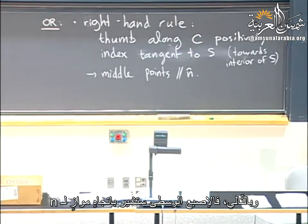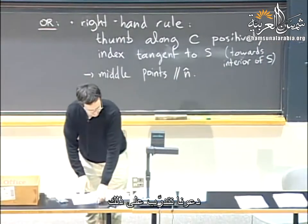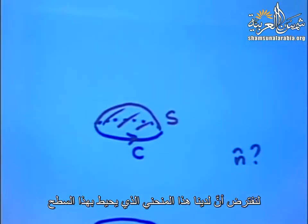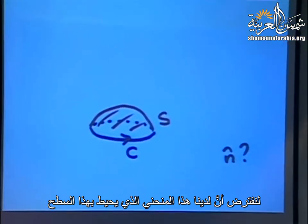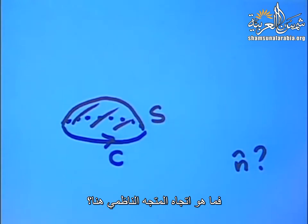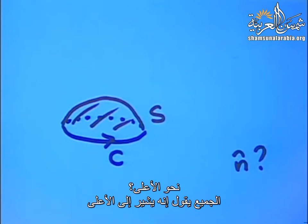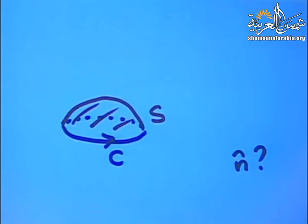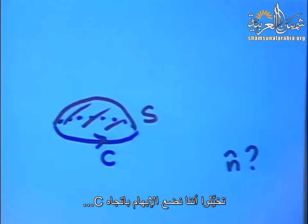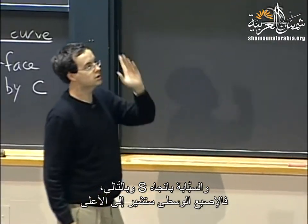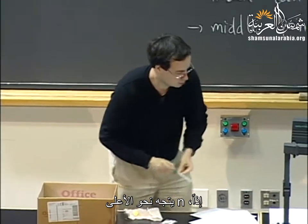Let's practice. For a curve bounding a flat surface with the curve going counterclockwise, the normal vector points up — everyone agrees. If you walk around C with S to your left, the normal vector points up. Using the right-hand rule: put your thumb along C, index finger toward S, and your middle finger points up. N points up.